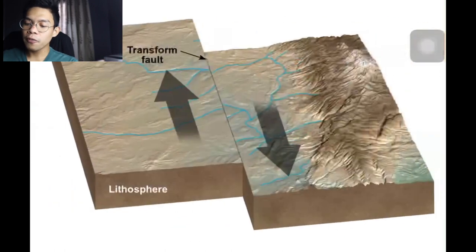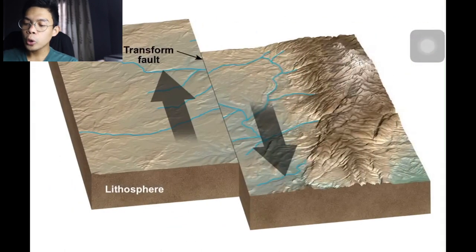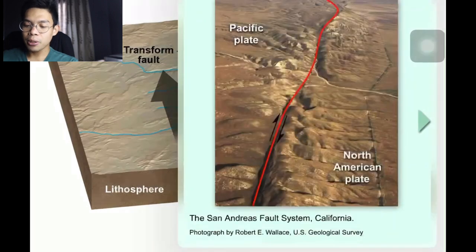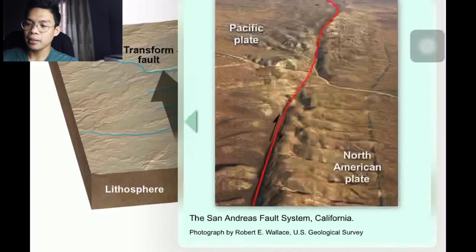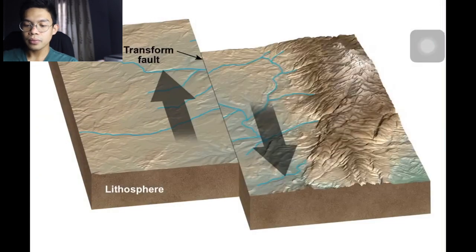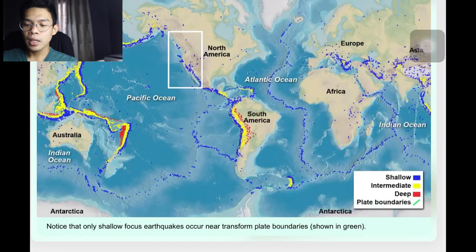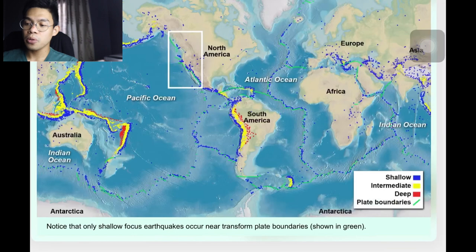Along transform faults, two plates grind past each other. An example of this is the San Andreas Fault, which separates the North American Plate and the Pacific Plate. Notice that only shallow-focused earthquakes occur at transform plate boundaries, shown in green.